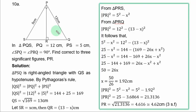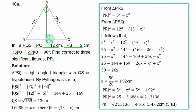Question 10a. In triangle PQR, PQ = 12 cm, PS = 5 cm, angle SPQ = angle PRQ = 90 degrees. Find, correct to 3 significant figures, PR. To get PR, we need either SR or QR. The entire length QS is needed. In triangle PSQ, which is a right-angle triangle with QS as hypotenuse: QS² = PQ² + PS² = 12² + 5² = 144 + 25 = 169, so QS = 13 cm.